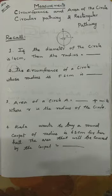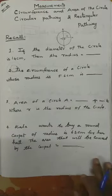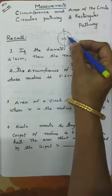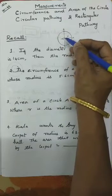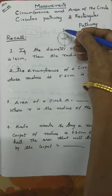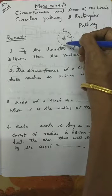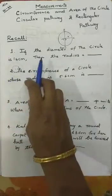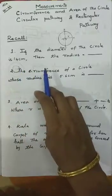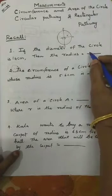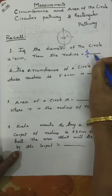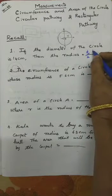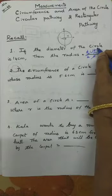We shall recall the circle. From the center to the circle, the line is called the radius. The line that touches the circle on both sides and passes through the center is called the diameter. If the diameter of a circle is 14 centimeters, then the radius is d divided by 2, which is 14 divided by 2, giving us 7 centimeters.